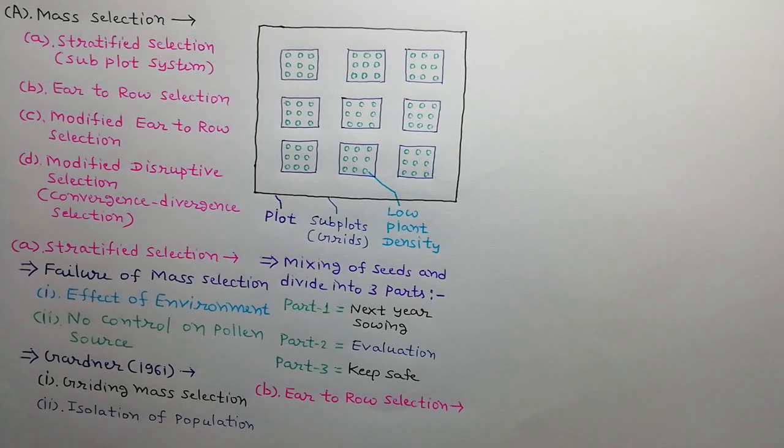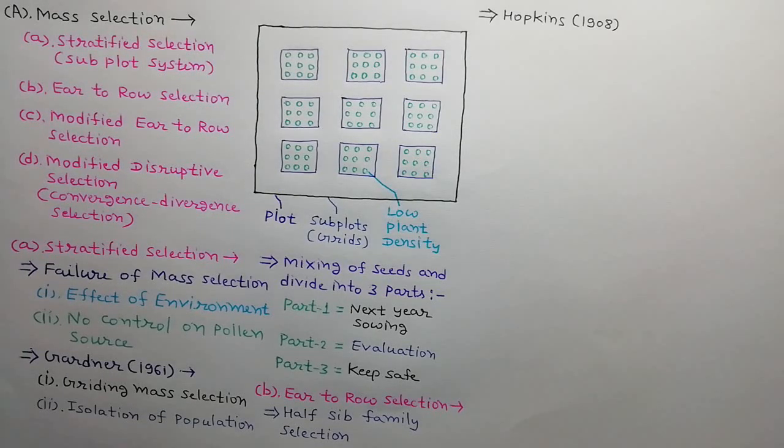Second modification is year to row selection. It is also called half sieve family selection. This method was developed by Hopkins in 1908. This method is commonly used for maize crop.